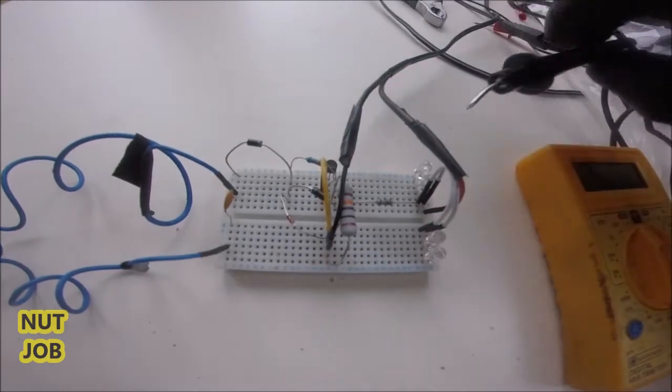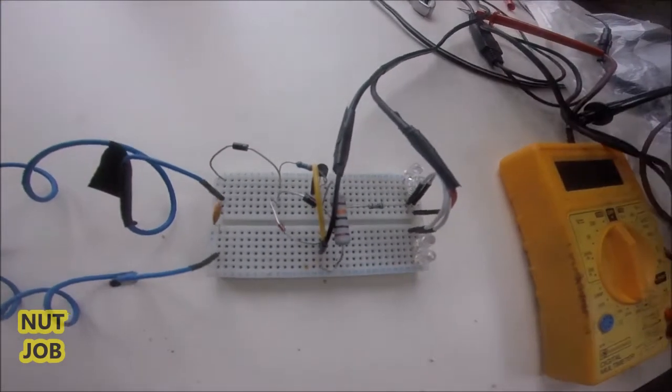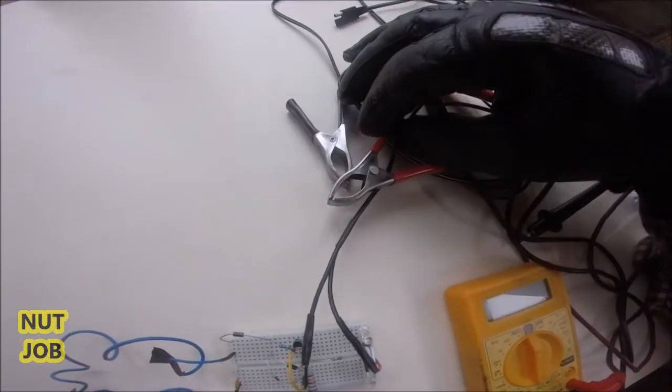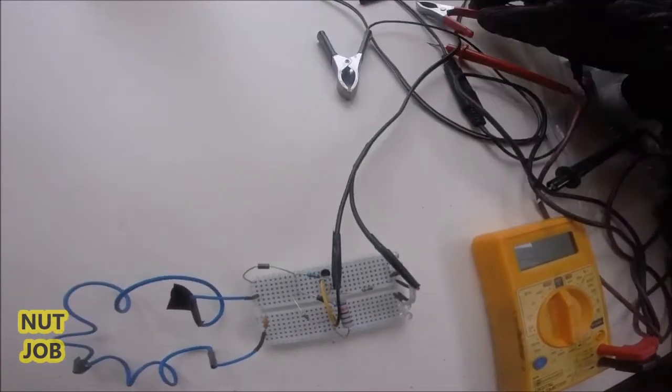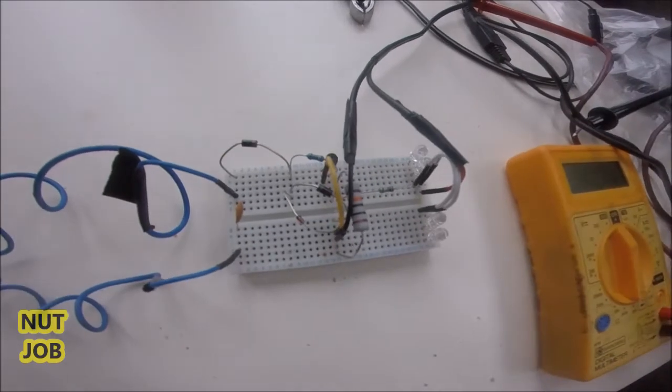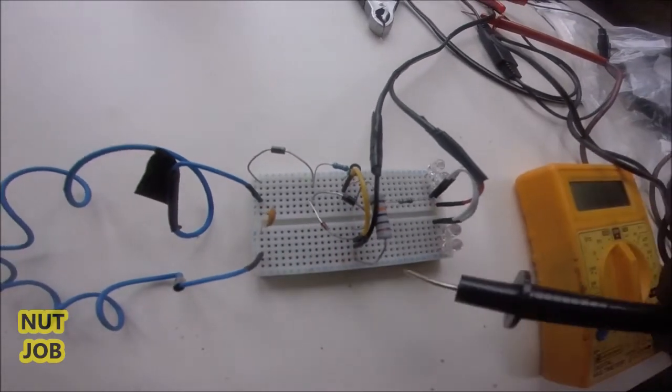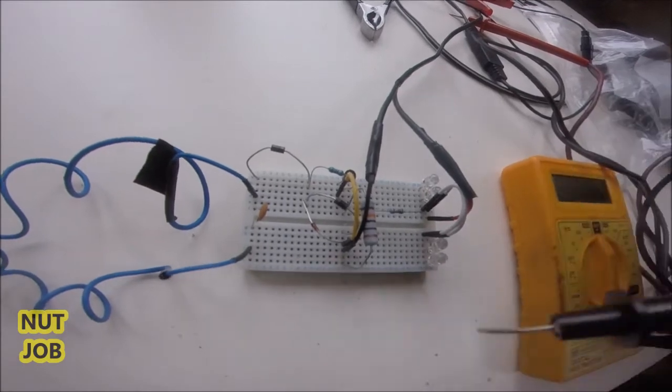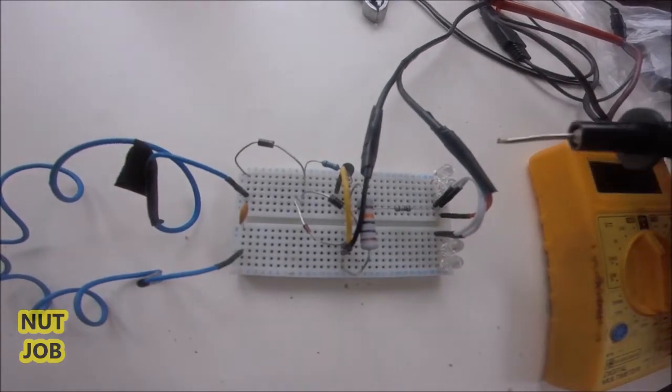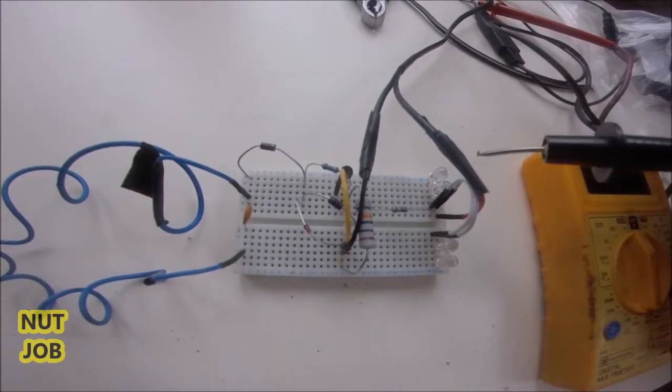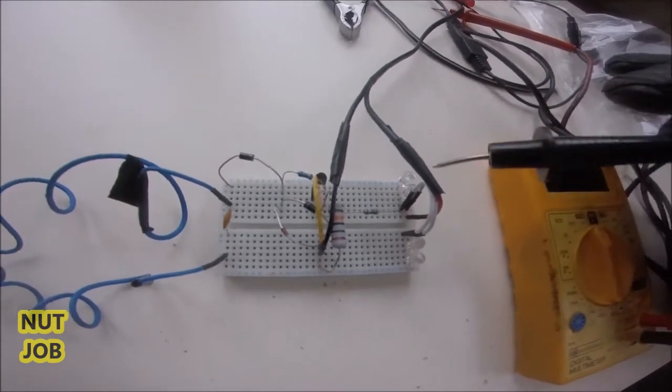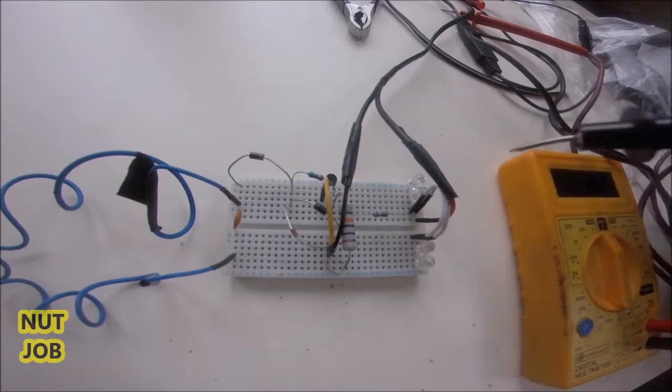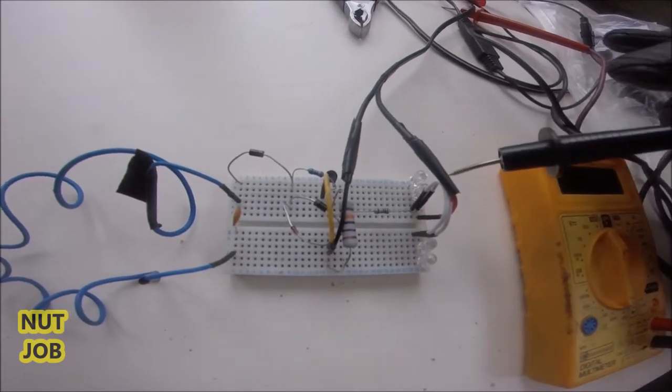Basically what you do is you get yourself a 12 volt supply, which we have here. I soldered these little connectors on so I can use it on this breadboard. Then I cannibalized four LED lights. There's a positive and there's a certain way you put them in - it's a cathode and an anode.